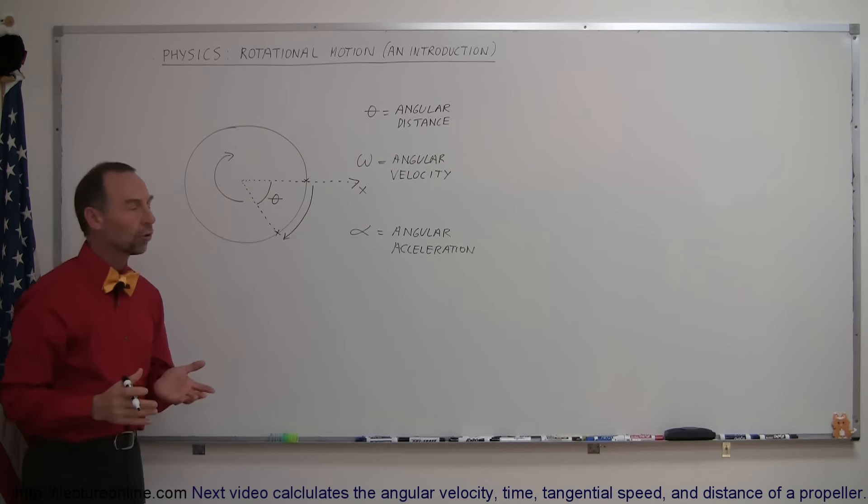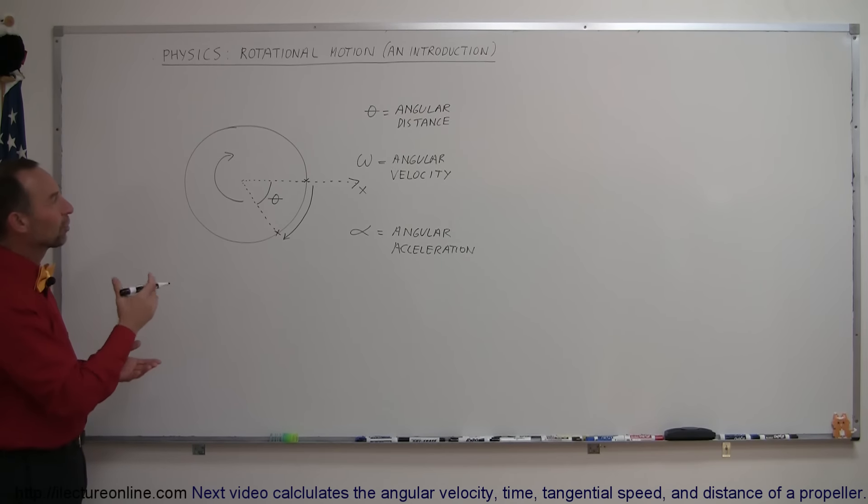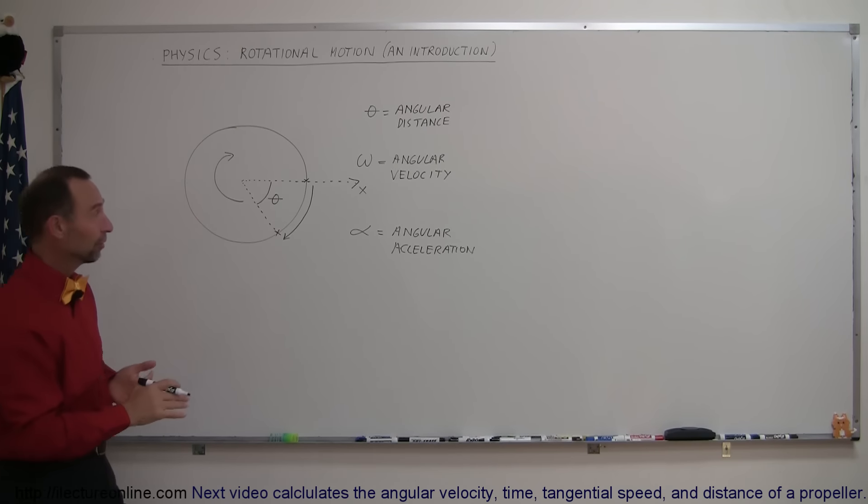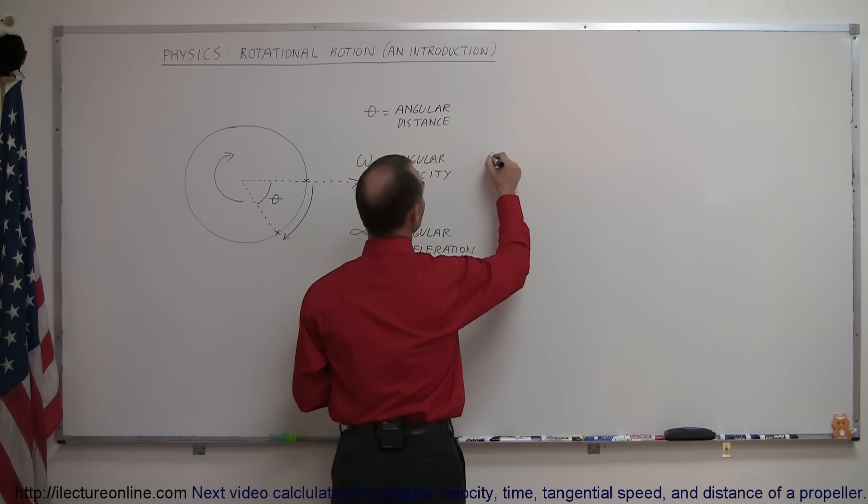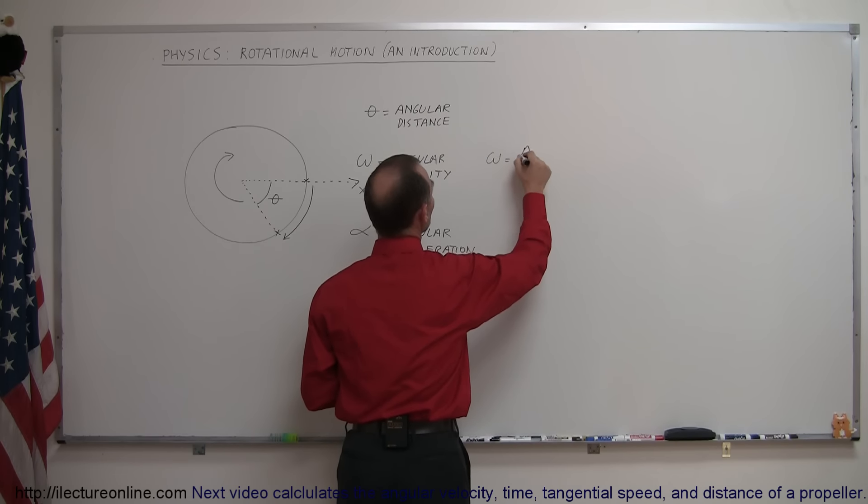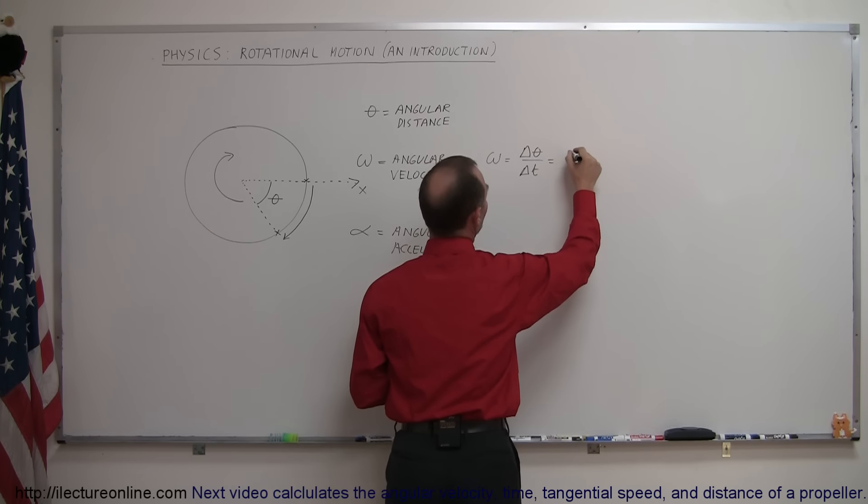So those are the three units or three terms that we use to describe rotational motion, and the definitions of them is that omega, by definition, is the change in angle over time, and if we want to do that in a differential equation, we can write that as d theta dt.